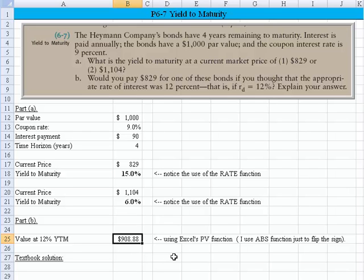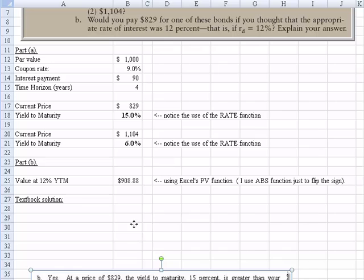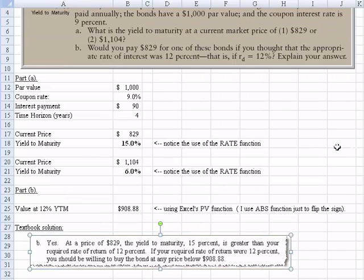So at a 12% yield to maturity rate, what I wind up with is $908. And we're asked, would you pay $829? And so we see that it's actually a good option for us. Let me slide up and show you what the textbook then tells us on this one. Let me slide back down so you can get most of it on the screen. So the textbook's answer is yes, you would go ahead and pay $829 for it, because the yield to maturity of 15% is greater than your required rate of return of 12%. And it backs into the $908.88 that we solved above.